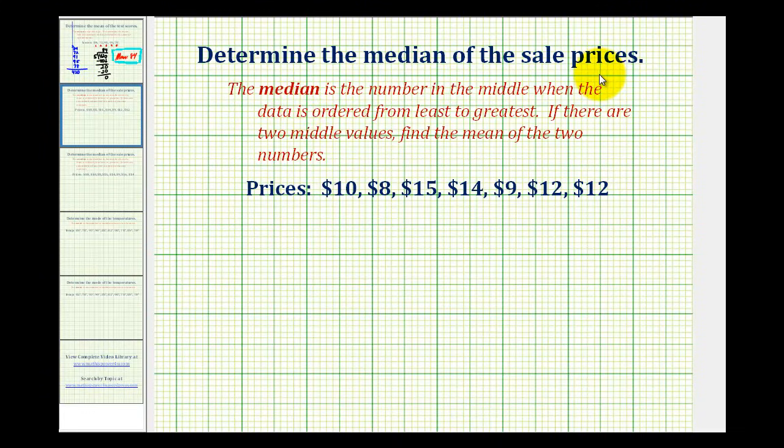We want to determine the median of the given sale prices. The median is the number in the middle when the data is ordered from least to greatest. If there are two middle values, we'll find the mean of the two middle values.